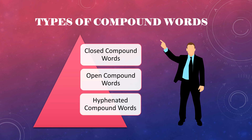Now, there are three types of compound words. Number one, closed compound words. Number two, open compound words. And number three, hyphenated compound words.